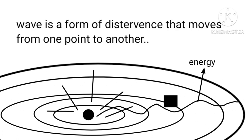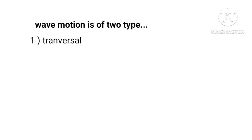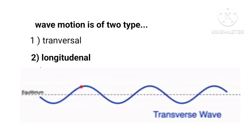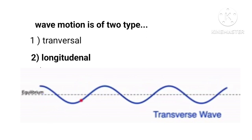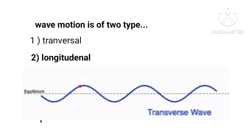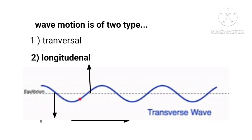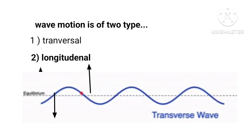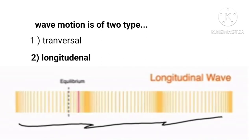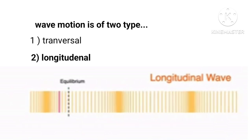So we can say that not the particle of the medium, but the wave is a form of disturbance that carries energy moving from one point to another. Wave motion is of two types: one is transverse and the second is longitudinal. In a mechanical wave, the oscillations involve constituents particles of the medium. If they oscillate perpendicular to the direction of wave propagation, we call it a transverse wave; if they oscillate along the direction of propagation, we call it a longitudinal wave.